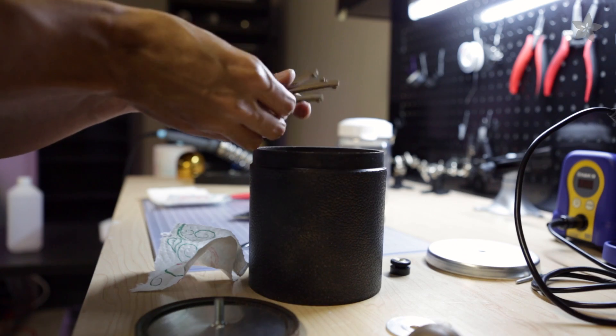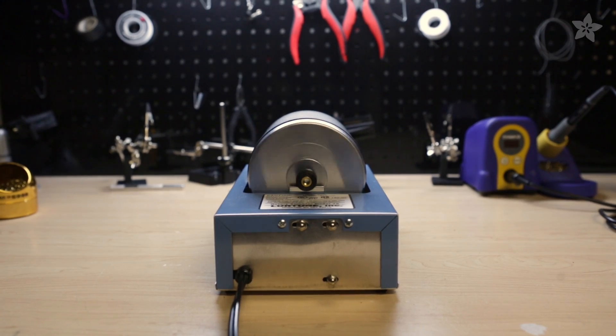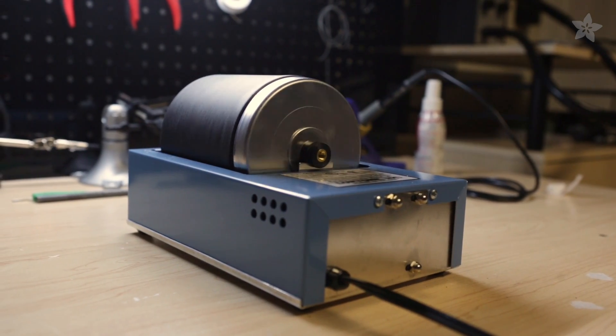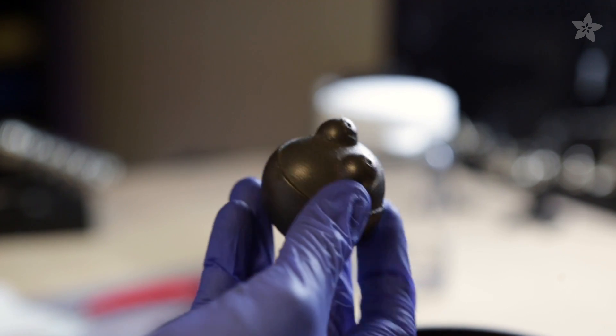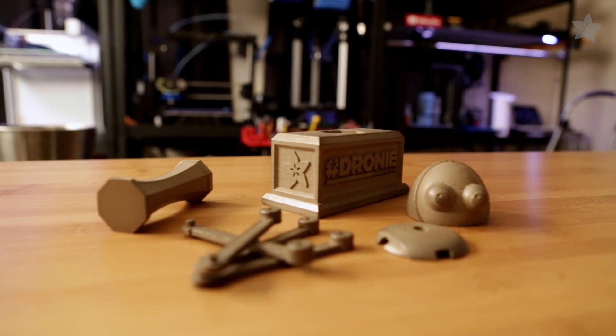I let the parts tumble for about one to two hours and use stainless steel screws as the medium. Using different size screws actually help polish the smaller details. The parts came out looking polished and have that bronze cast look. They're really shiny and it feels just like metal. The weight of this stuff is what makes it really cool.